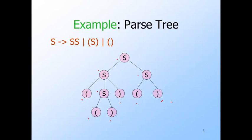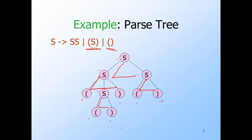The production of the root is S goes to SS — you can see that by looking at the root and its two children. Here's another interior node whose children's labels are left paren, S, right paren, corresponding to another production of the grammar. And here we have an interior node labeled S whose children are labeled left paren, right paren, corresponding to that production body. The same production is used again elsewhere in the tree.